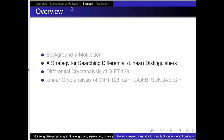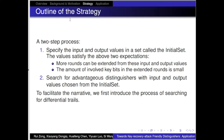The second part is our strategy for searching differential and linear distinguishers. It is a two-step process. In the first step, we specify the input and output values in a set called the initial set, where the values satisfy our two expectations: more rounds can be extended from the input and output values, and the number of involved key bits in the extended rounds is small. In the second step, we search for advantageous distinguishers with input and output values chosen only from the initial set.